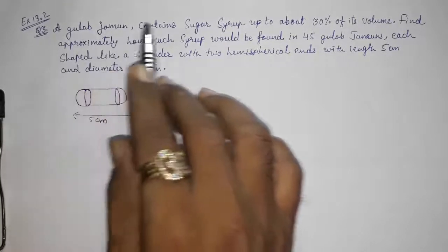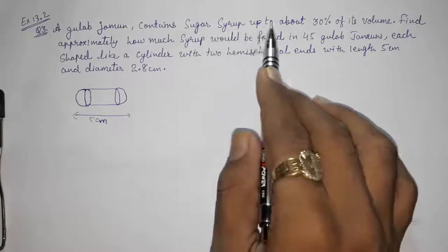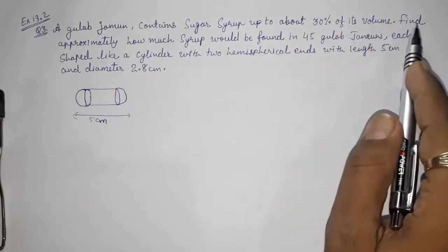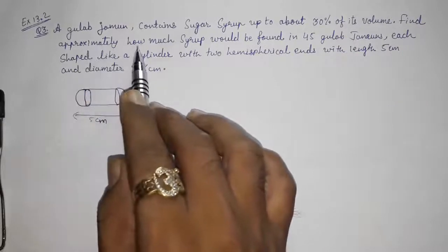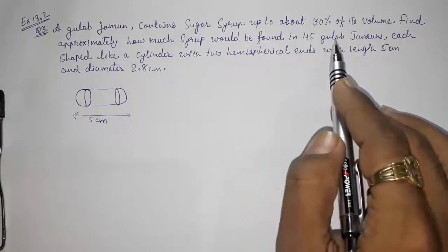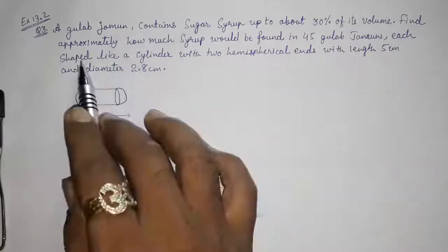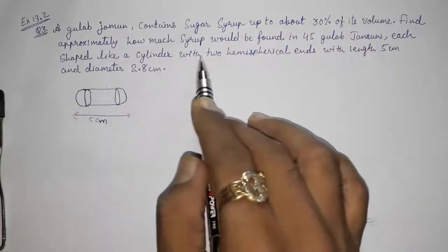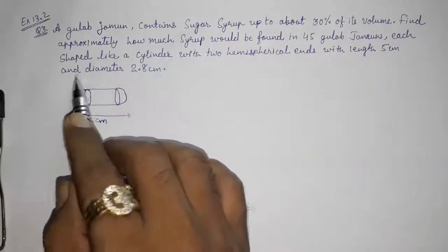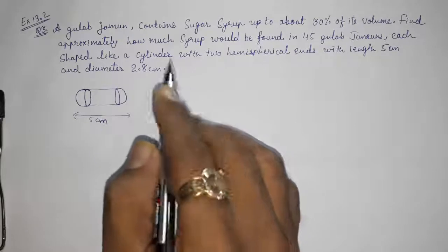A gulab jamun contains sugar syrup up to about 30% of its volume. Find approximately how much syrup would be found in 45 gulab jamuns, each shaped like a cylinder with two hemispherical ends with length 5 cm and diameter 2.8 cm.